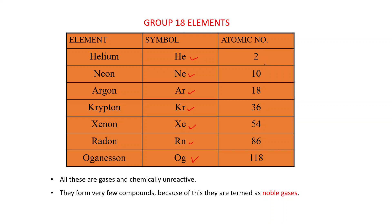You can easily correlate the atomic numbers. If you add plus 8, then we get the next element, and again plus 8. Then from the next pair you can add 18, and again 18. Then you can add 32, and again 32. These numbers 8, 8, 18, 18, 32 are magic numbers.